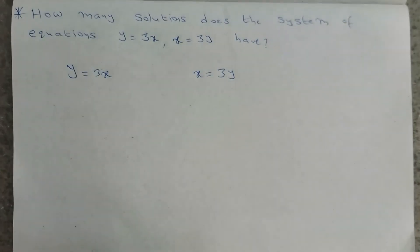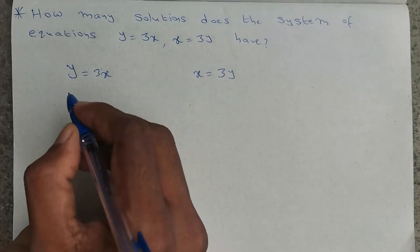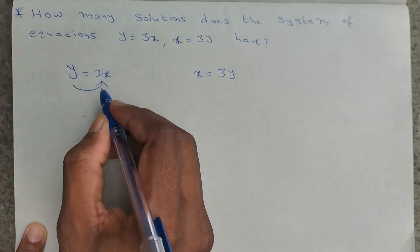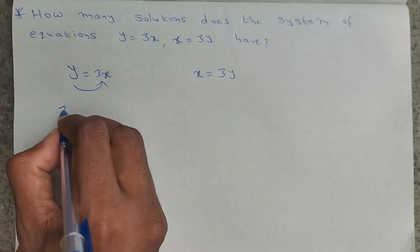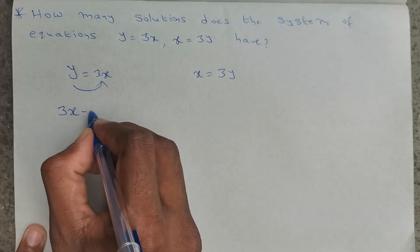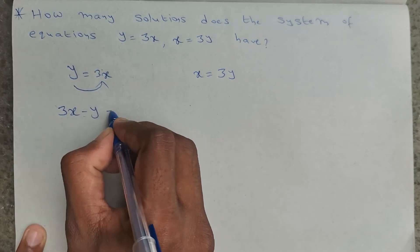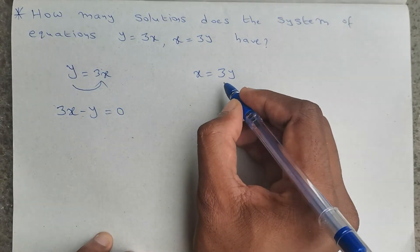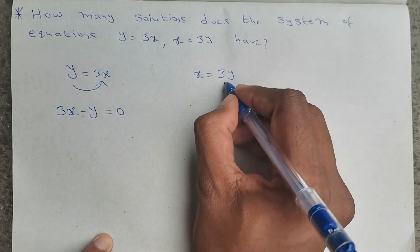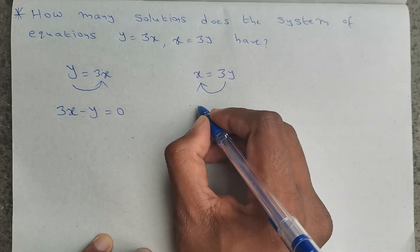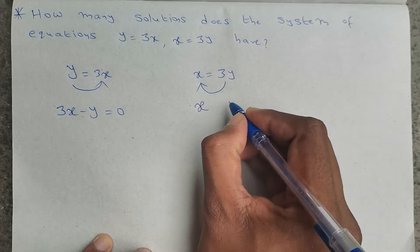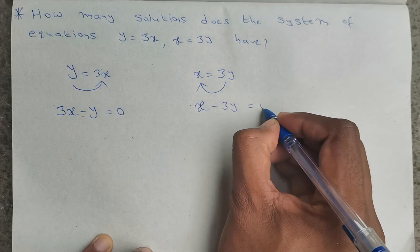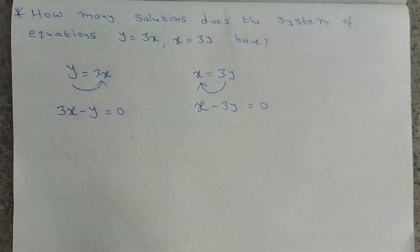I will bring everything to one side. Taking y to the right side, 3x minus y equals 0. Then bringing 3y to the left side, x minus 3y equals 0.